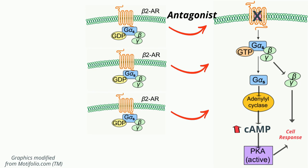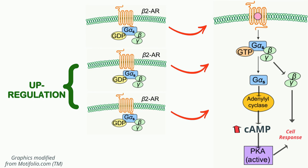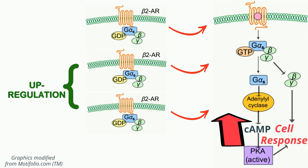Beta-adrenergic blockers such as propranolol or atenolol, used to manage heart rate and blood pressure, reduce signaling through the linked adenylate cyclase. The reduction in cyclic AMP and also the receptor degradation rate eventually result in upregulation of beta-receptors on the cell membrane. Withdrawal of these drugs would initially be associated with hyperreactivity to endogenous mediators such as epinephrine, potentially leading to rebound hypertension. This clinical effect is known as overshoot, and is the reason that gradual withdrawal of autonomic drugs is recommended whenever possible to allow cell and tissue responsiveness to return to normal.